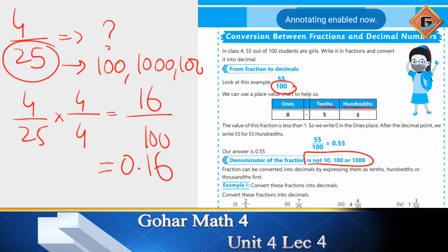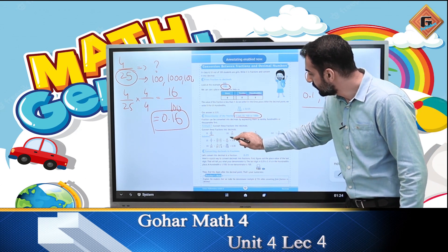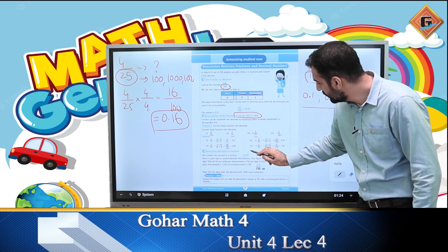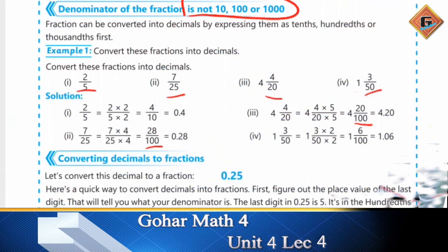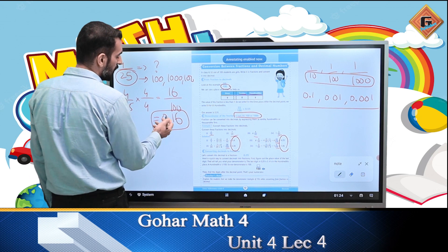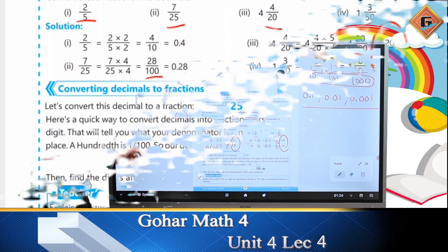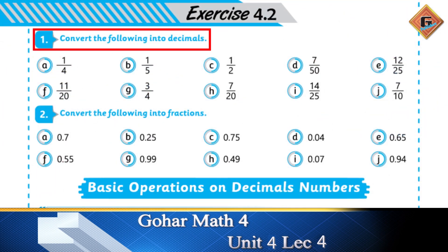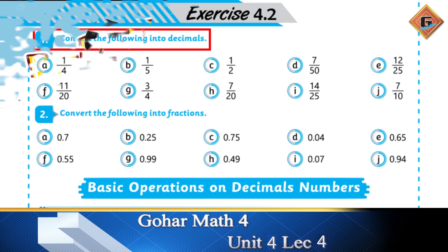इसी तरह यहाँ पर 4 examples दी गई हैं जिनके denominators different हैं। इन सब denominators को सबसे पहले 100 में convert किया है और फिर values लिख ली हैं। अगर कोई ऐसी value आ जाए जिसमें whole number कोई और हो — 0 न हो — तो हम वो whole number भी लिख सकते हैं, जैसे एक example में दिया गया है।